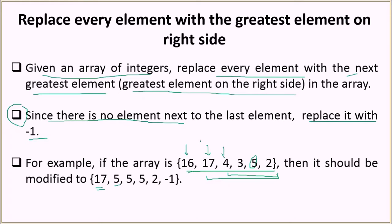We continue — the next greatest element is again 5, so we replace with 5. Same for the next element; the next greatest element is 5. Then we come to 5 itself, and the next greatest element is 2 because that's the only element remaining. Finally, we come to 2 — this is the last element, which is a corner case, so we replace it with minus one. That is basically the problem.